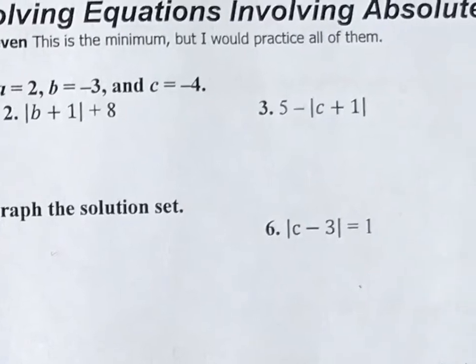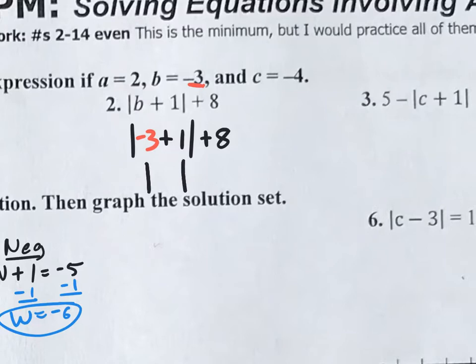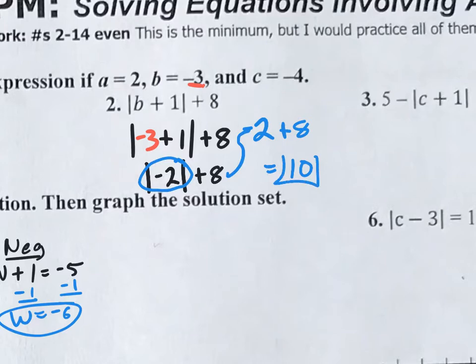Let's try number two — this is not equations, just plugging in and working out. Rewrite everything but instead of b, plug in the value of b, which is negative three. What is negative three plus one? Negative two. Then you have plus eight outside. The absolute value of negative two is two. So you really have two plus eight, which equals ten. There will be three or four of these on the quiz Friday.